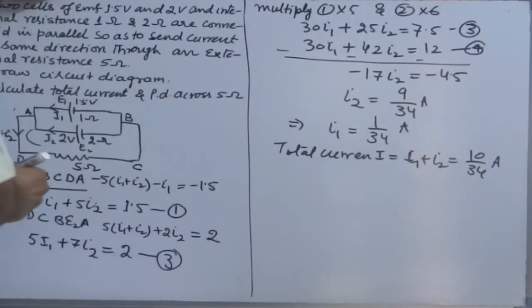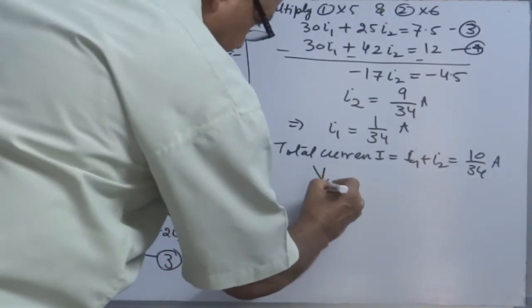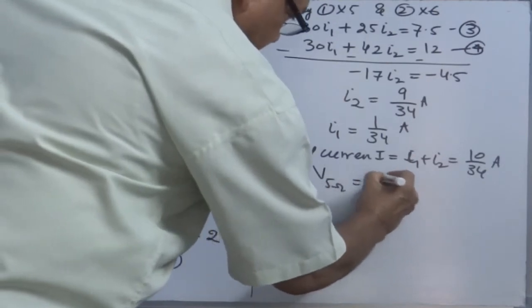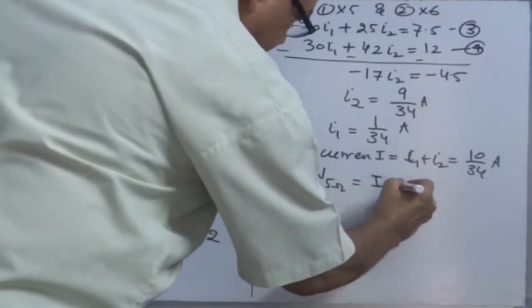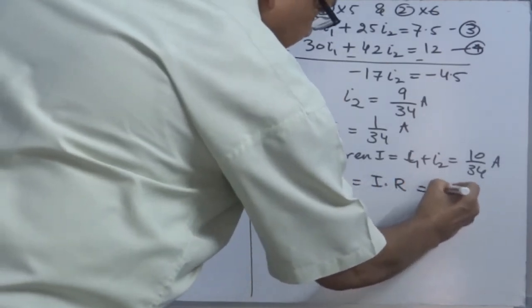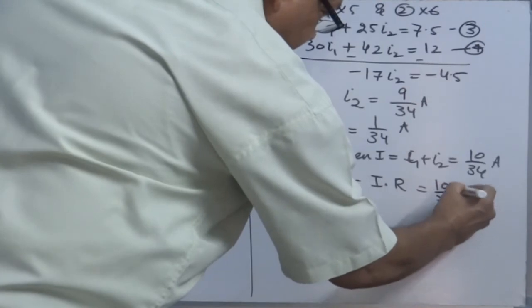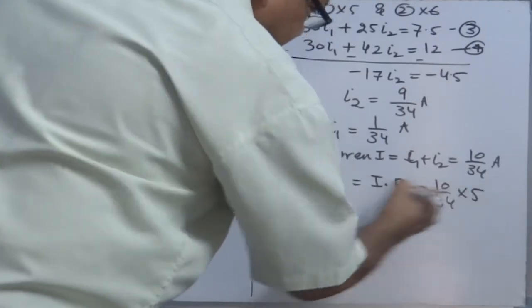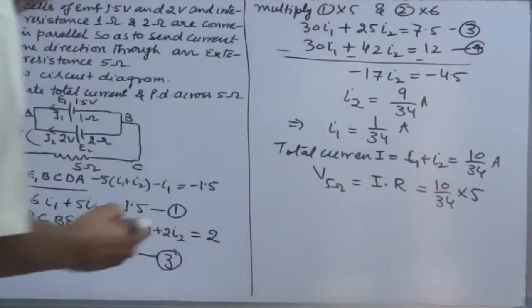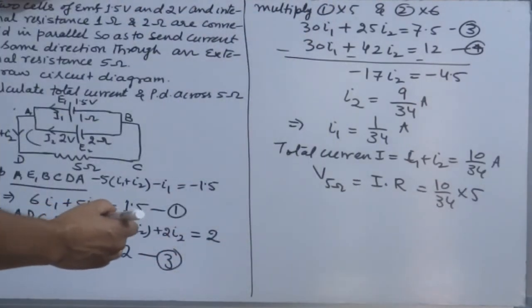Total current through the 5 ohm resistance: I1 + I2 = 10/34 ampere. Total potential difference across 5 ohm: total current × R = (10/34) × 5 = 25/17 volts.